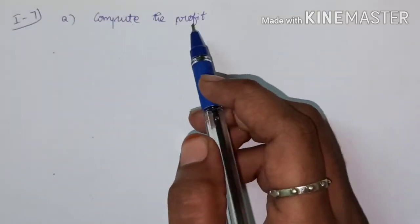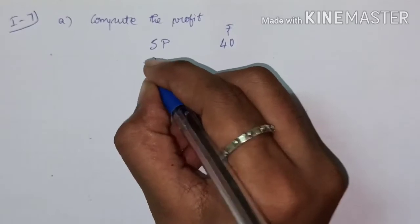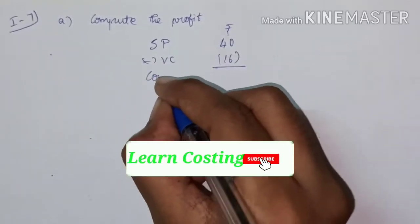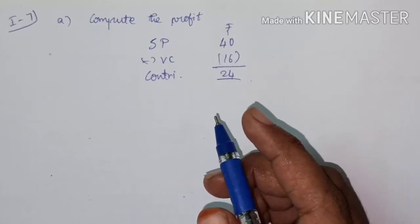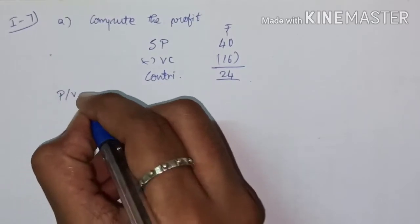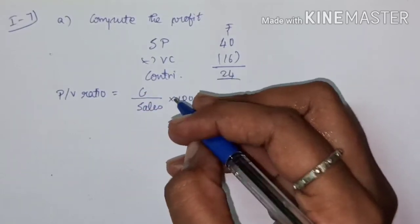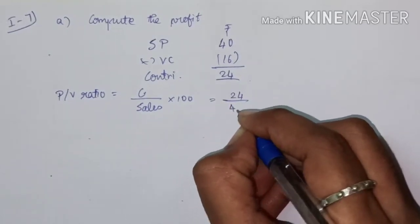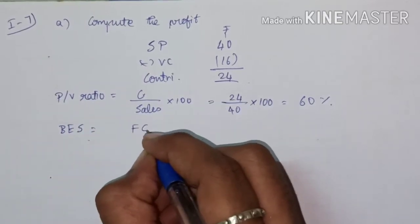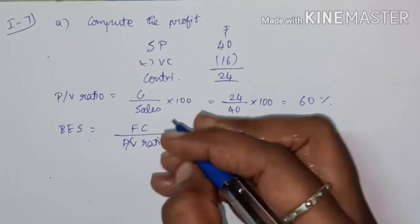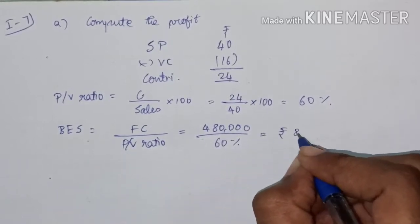First, we have to compute the profit. The selling price given in the question is Rs.40 and variable cost is Rs.16, so contribution is Rs.24. To calculate break-even sales, we need the PV ratio. The formula is: contribution divided by sales into 100, which is 24 divided by 40 into 100, giving 60%. Break-even sales equals fixed cost divided by PV ratio: 4,80,000 divided by 60% equals Rs.8,00,000.